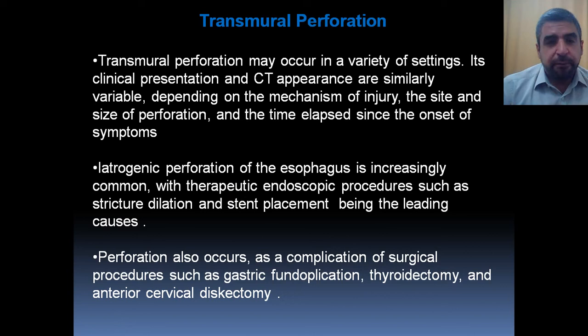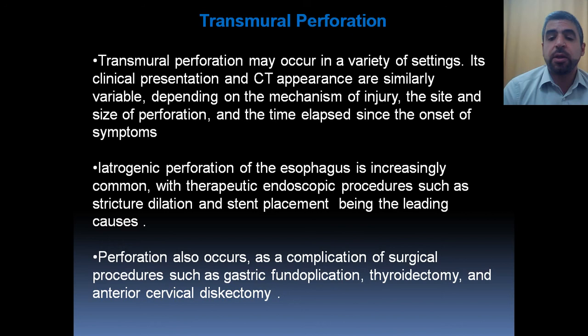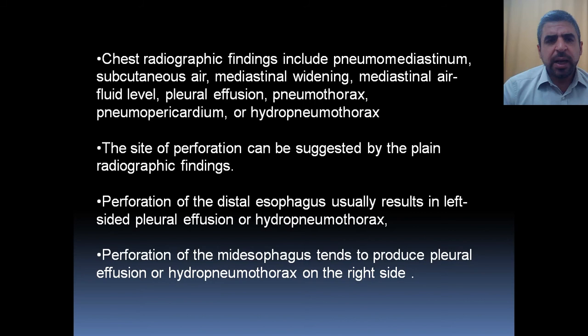Transmural perforation is the most catastrophic event and may occur in a variety of settings. Clinical presentation and CT appearance depend on the mechanism of injury, the site and size of perforation, and the time elapsed since onset of symptoms. Iatrogenic perforation of the esophagus is increasingly common — therapeutic endoscopic procedures like stricture dilatation and stent placement are the leading causes. It can also occur as a complication of surgical procedures like gastric fundoplication, thyroidectomy, and anterior cervical discectomy. Chest X-ray will show pneumomediastinum, subcutaneous air, mediastinal widening, mediastinal air-fluid level, pleural effusion, pneumothorax, pneumopericardium, or hydropneumothorax.